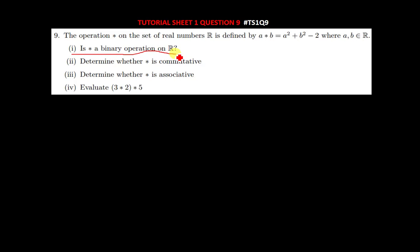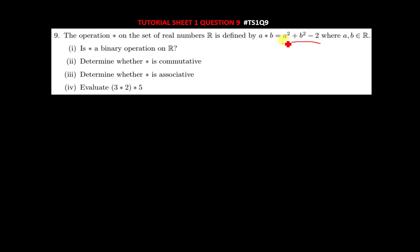The first question asks: is star a binary operation on the set of real numbers? You can ask yourself: is there a way we can use a real number to replace a or b and find that the answer becomes undefined? If there is no way to make this expression undefined, then star is a binary operation. No matter what number you replace for a squared or b squared, it's not possible to make this expression undefined.